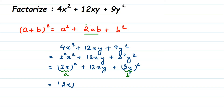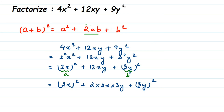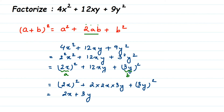So this equals (2x)² + 2 × 2x × 3y + (3y)². You can see this is exactly the right-hand side of the identity a² + 2ab + b², where a = 2x and b = 3y. And a² + 2ab + b² = (a + b)², so this whole expression equals (2x + 3y)². That's the final answer.